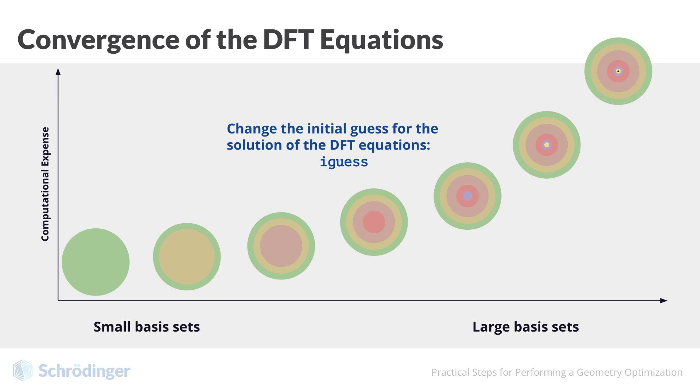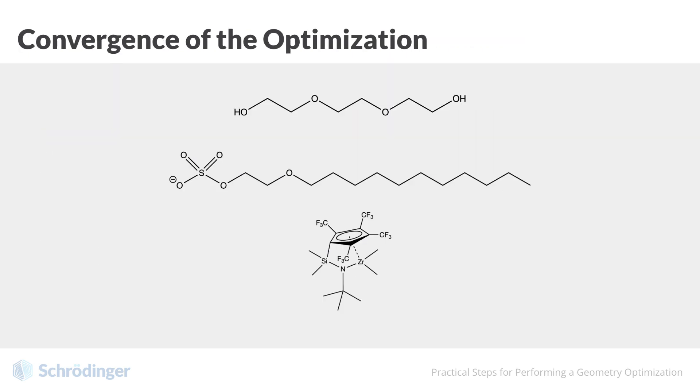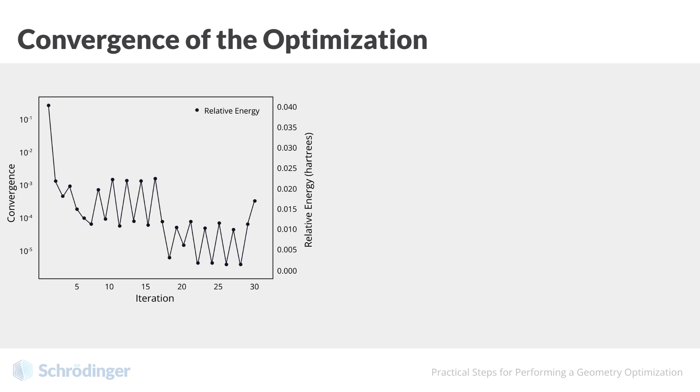The most common failure in the geometry optimization process is observed for large and flexible structures that have multiple local minima. For such structures, the iterative process may run out of steps. An obvious first attempt to solve this problem is to start from a different initial geometry. If you are using the PBF solvation model, consider switching to the alternative solvation model called PCM. This method may converge the geometry faster and in fewer steps.